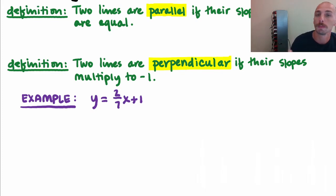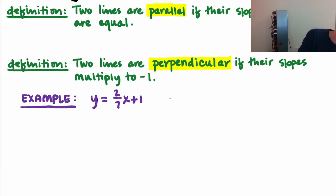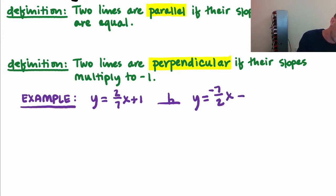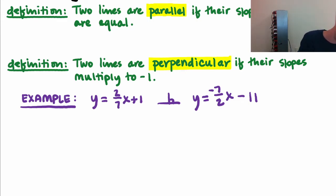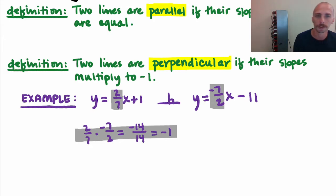We would take the slope — if it's a fraction, flip it and make it negative. If the slope is four, you turn it into a fraction: four over one, then flip and make it negative. So y equals two-sevenths x plus one is perpendicular to a line with slope negative seven over two, plus any y-intercept. These two lines are perpendicular because if I multiply their slopes — two-sevenths times negative seven over two equals negative 14 over 14, which is negative one.